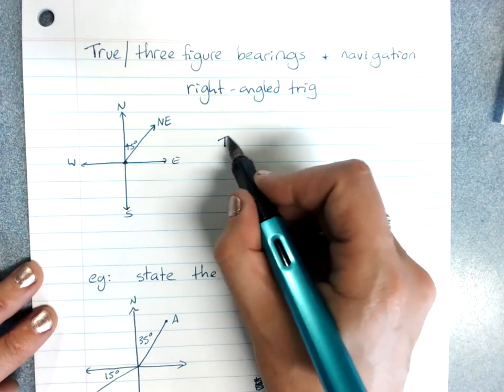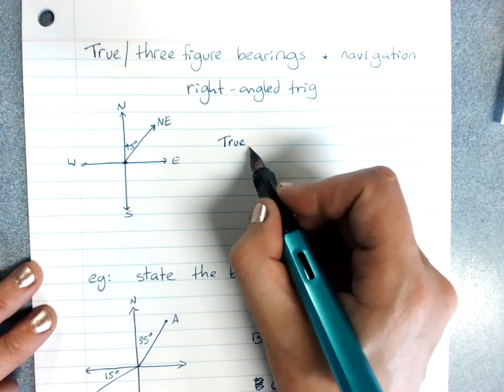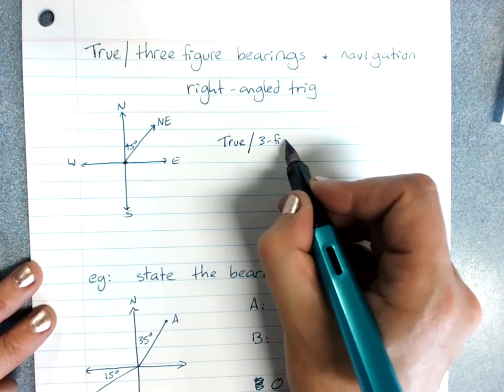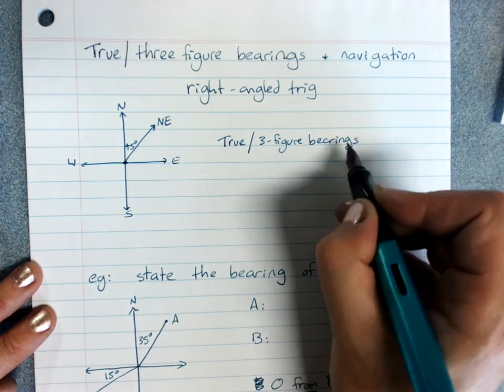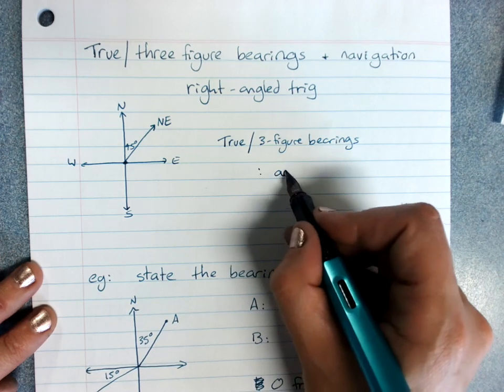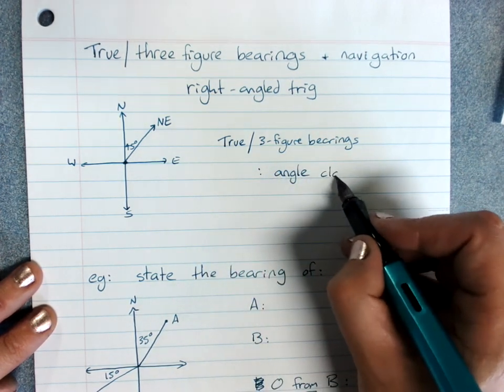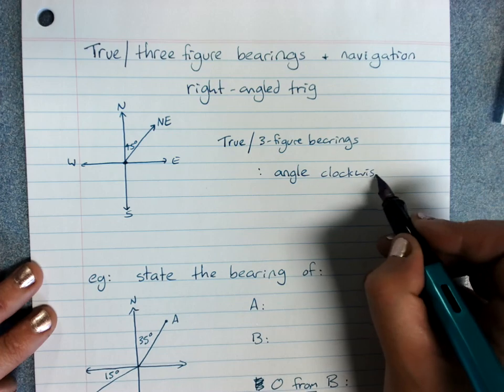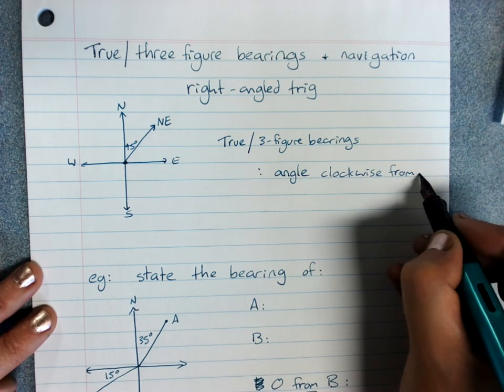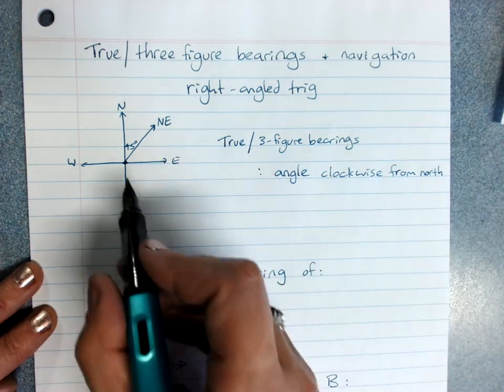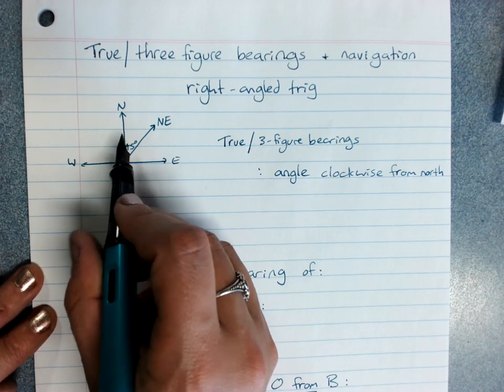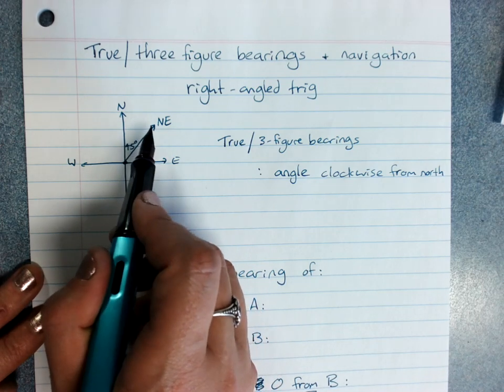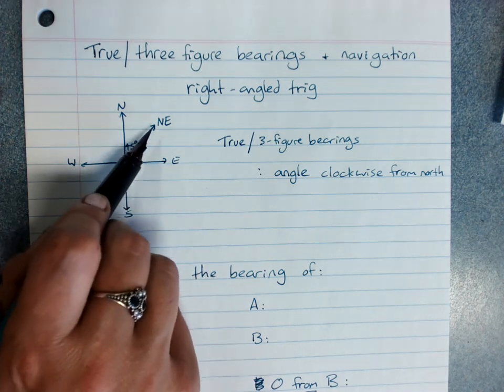So the type of bearings that we're usually using are called true or three figure bearings. And they are the angle clockwise from north. That is, where I'm standing, if I was looking north, what angle would I have to turn through to be facing the direction I want to go?